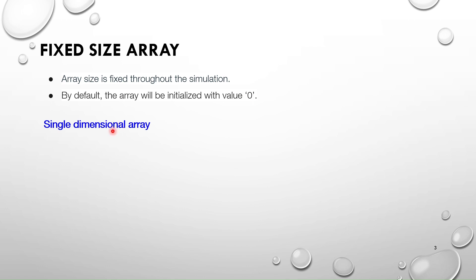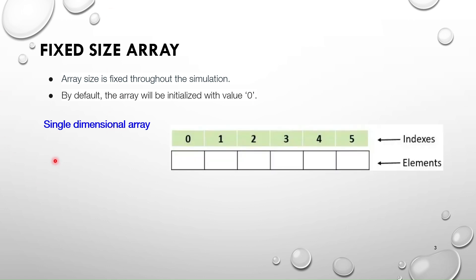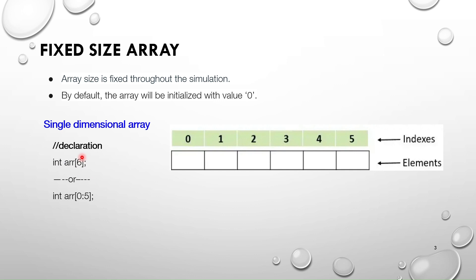In fixed size arrays we have single dimensional and multi-dimensional arrays. Single dimension means the dimension is single — elements are stored linearly. This is how we declare a single dimension fixed size array: 'int array[6]'. Throughout the simulation the array size will be 6 only — you cannot change it at runtime.